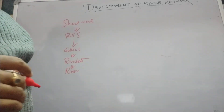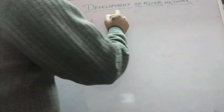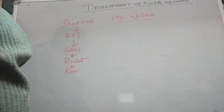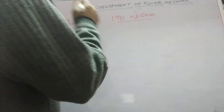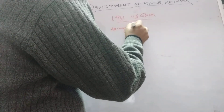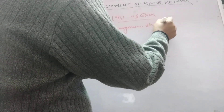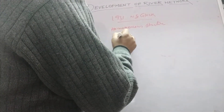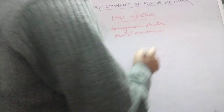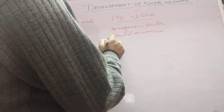There are certain phases that have been followed for the development of a river. In 1931, W.S. Davis proposed an explanatory model regarding the evolutionary phases of drainage network development. According to him, considering a homogeneous structure and humid environment, there is a systematic development of the drainage network, which he classified into five important phases.